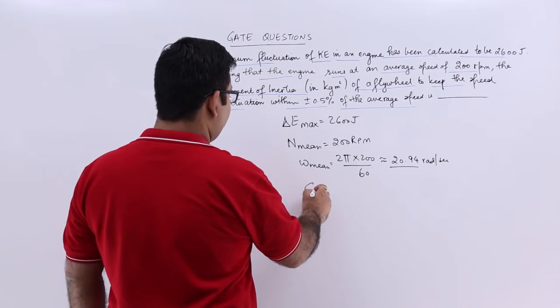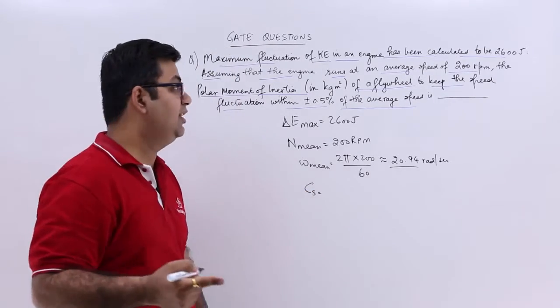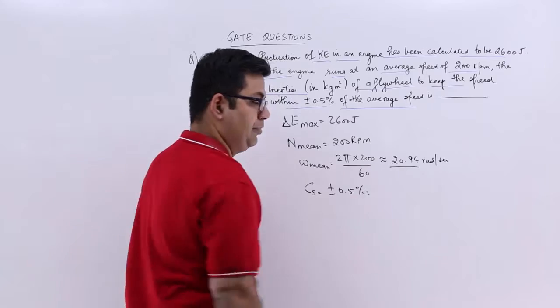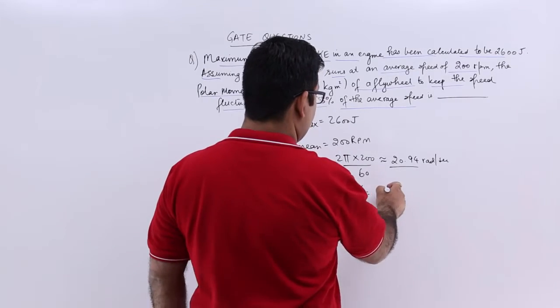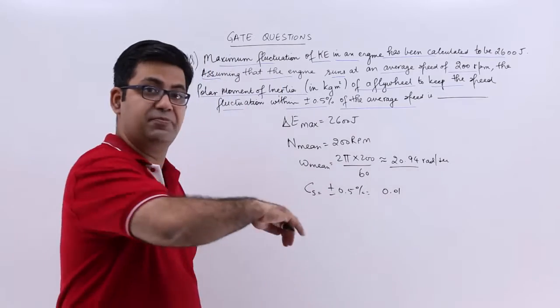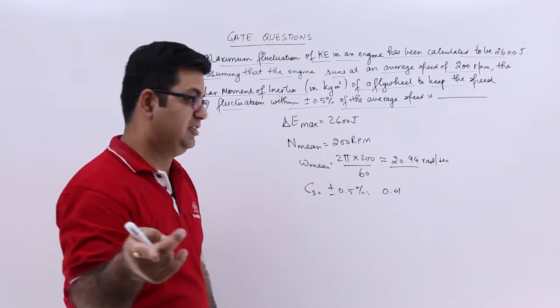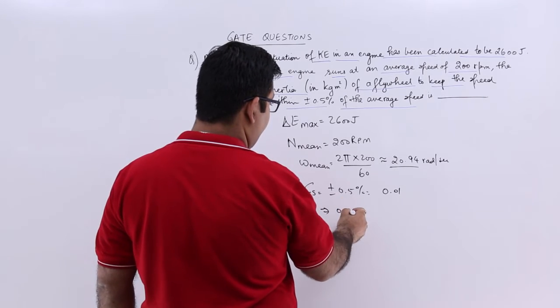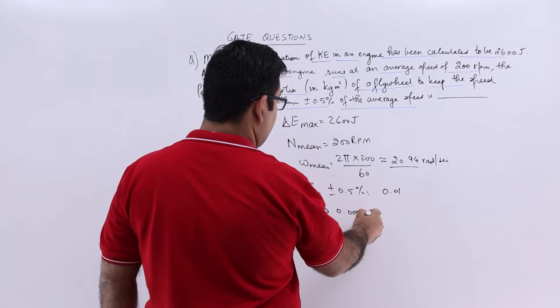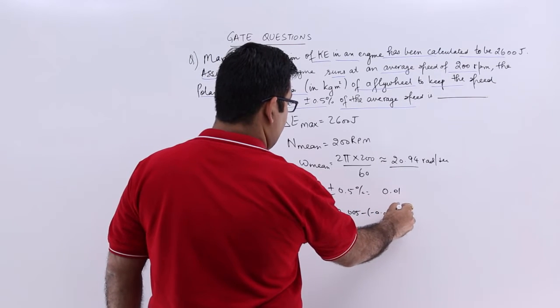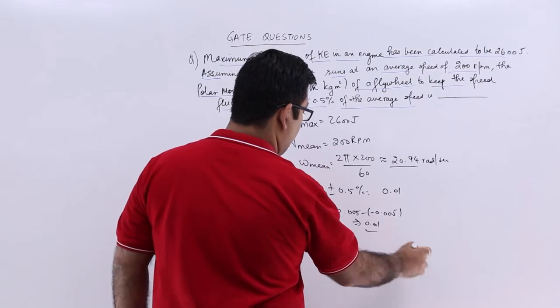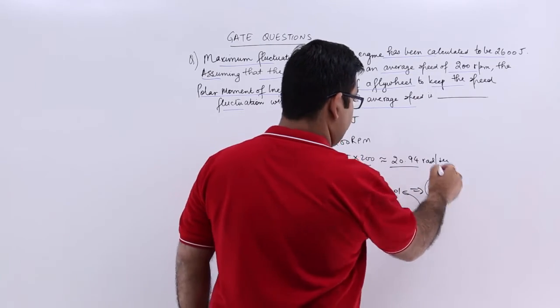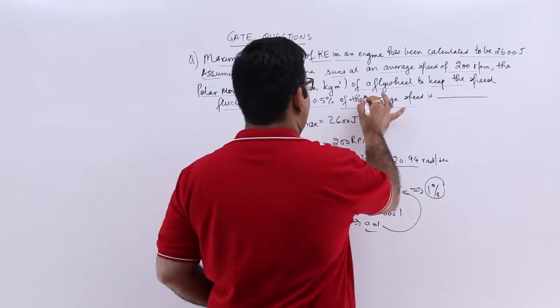Now the value of cs, that is the coefficient of fluctuation, is plus minus 0.5 percent. So this would be 0.01 from minus 0.5 to plus 0.5, that is 0.005 minus minus 0.005, which gives you 0.01. This means it is 1 percent. So the total is 1 percent of the average speed.